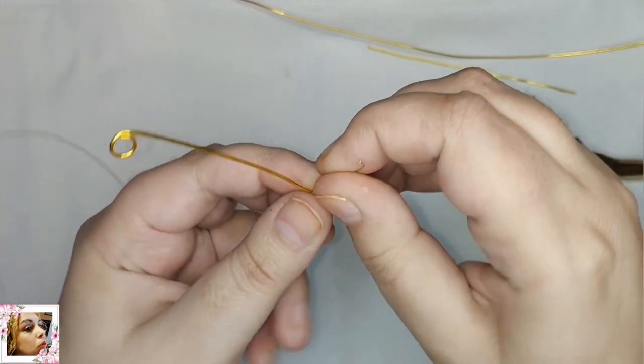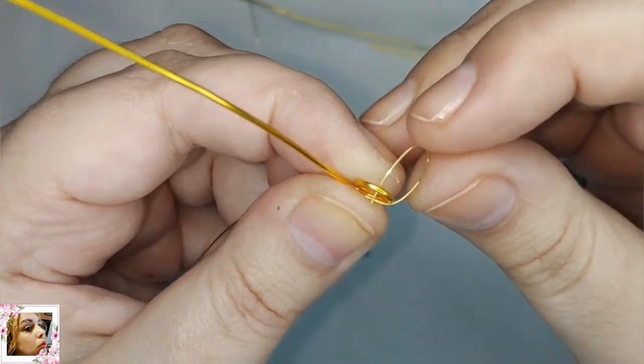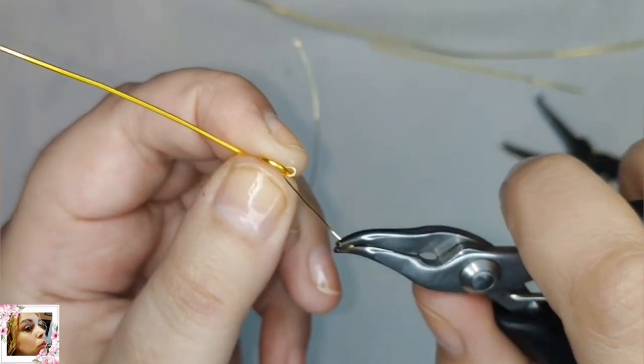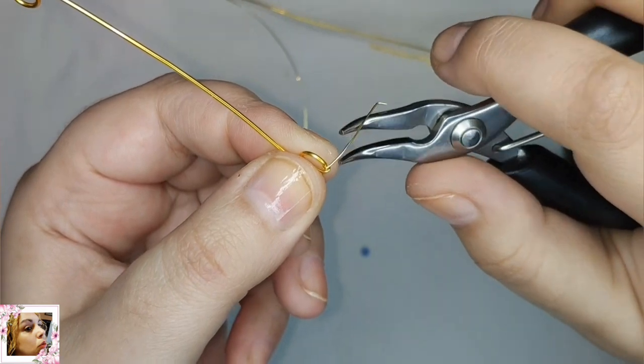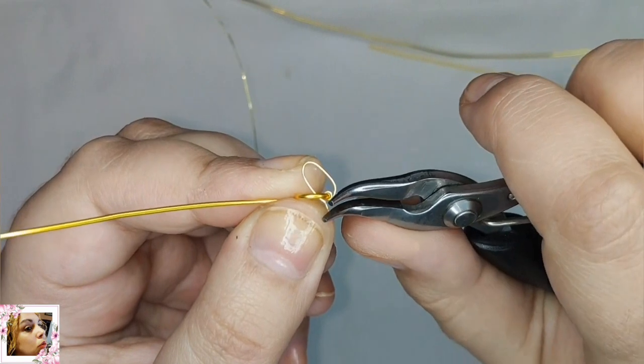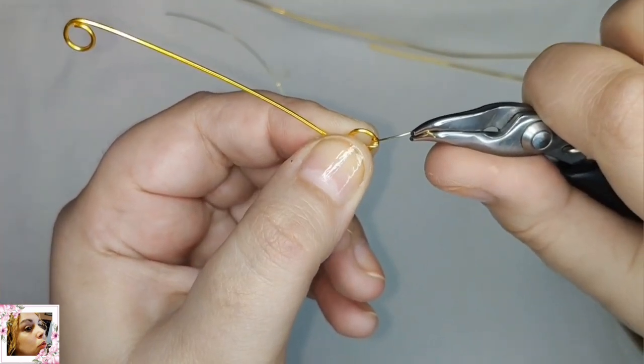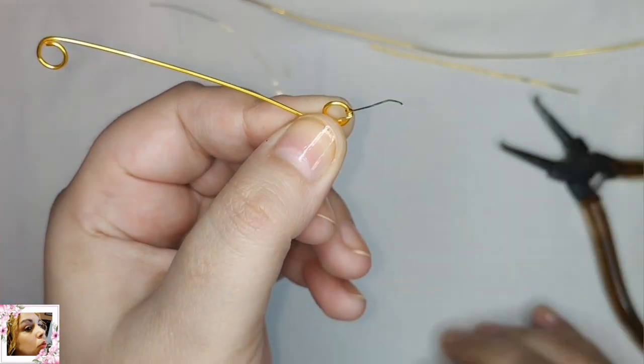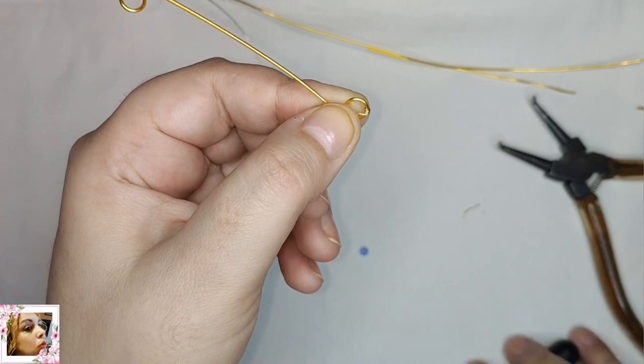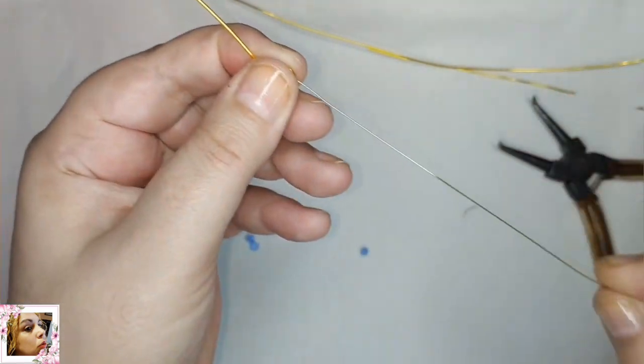Yo voy cortando tramos de 30 y conforme se me vaya acabando, pues corto tramos mayores. Voy a enrollar primero aquí, donde dobla el círculo, hacia el interior, hacia el mástil principal. Ahí tenemos que dar aproximadamente tres vueltas, tres vueltas y media, porque vamos a cortar por el interior.